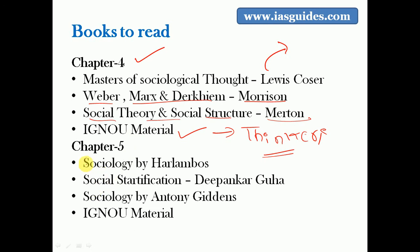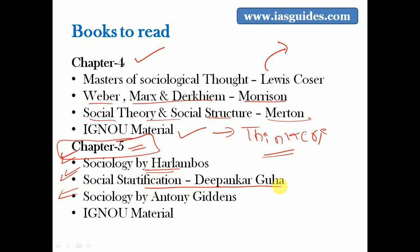Chapter five is related to stratification - meaning inequality. The books to read are Haralambos's blue colour book, Stratification by Dipankar Guha (a very standard book), and Introduction to Sociology by Anthony Giddens. Also pick up the relevant chapters on stratification from the MA IGNOU material and read those.